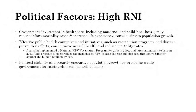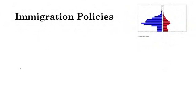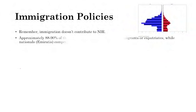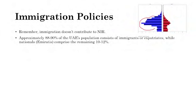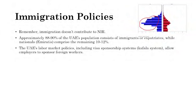Political stability — a non-corrupt, secure government — encourages population growth because it's a safe environment for raising children. Immigration policies also impact population change, though immigration doesn't contribute to the natural increase rate. For example, 88-90% of the UAE's population are immigrants, with nationals comprising only 10-12% — making nationals a minority. The UAE has many guest workers, predominantly male, which explains the dominant male cohorts in its population pyramid from about ages 20 to 65.